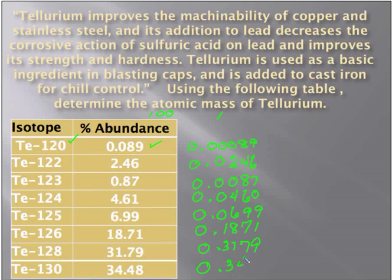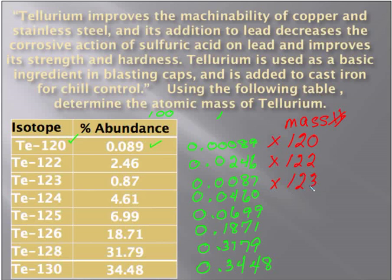Once I've converted all those numbers into fractions, I'm simply going to multiply them by their mass number. We'll talk in a minute about the fact that not all mass numbers will be whole numbers, but let's work with these lovely whole numbers for now. So that would be times 123, times 124, 125, 126, 128, and 130. We do all of that multiplication — we have calculators for a reason.